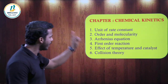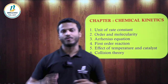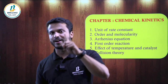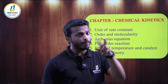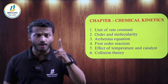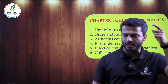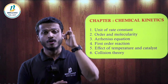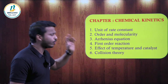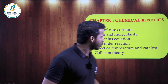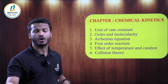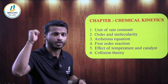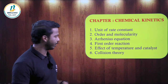Definitely expect a question from first-order reaction. The rate constant: k = 2.303/t × log(R₀/R). Rate constant calculation, time calculation, or half-life calculation may be asked. The expression for half-life: t½ = 0.693/k. Revise and practice writing these equations and numericals related to first-order reactions — very sure. Also, the effect of temperature and catalyst is important.